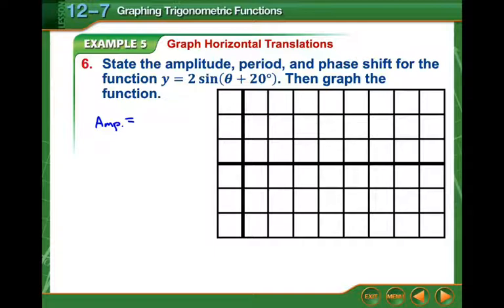Having some brain farts here. Last video, the fourth one today. And then our period, there's nothing being multiplied by theta, so that is just 360 still. And then our phase shift is 20 degrees to the left. So now, our sine usually would go through the origin, but now it's going to shift over 20 degrees.